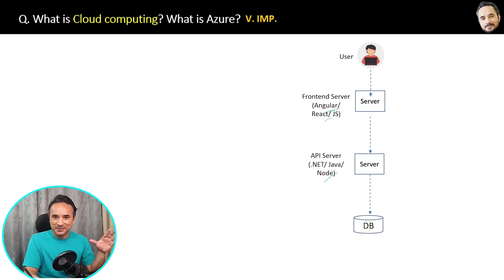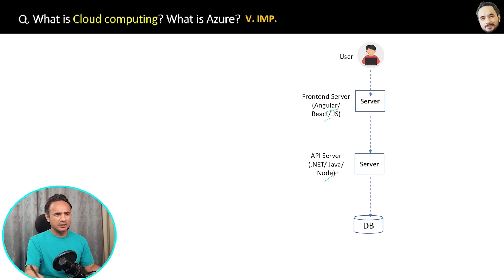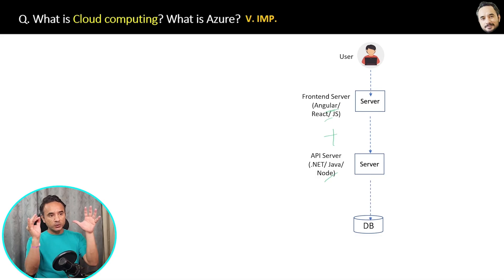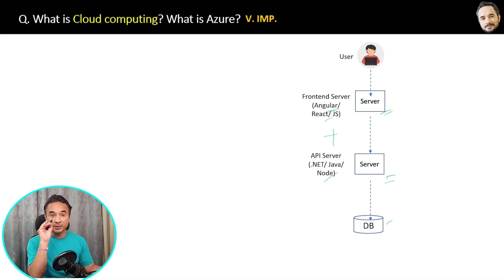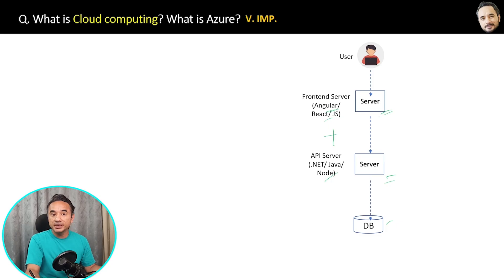If there is any data required, it will get the data from the database server and finally send the response back to the user. Sometimes your front-end and back-end can be in the same single application. This is how your basic application is running with the help of these servers and the database. These servers plus database together is called infrastructure, or on-premises infrastructure.